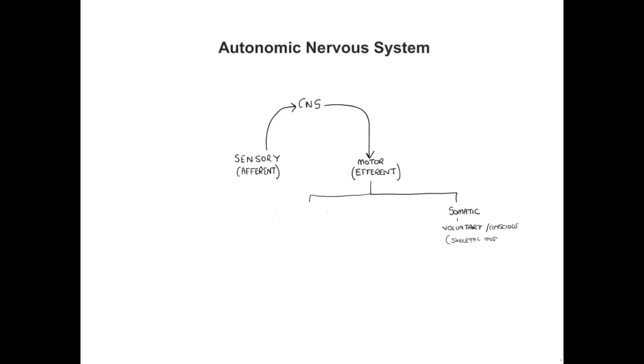The other arm of the motor or efferent peripheral nervous system is our general visceral efferents. You're perhaps more familiar with these as the autonomic nervous system. These motor efferents are innervating structures that are not necessarily under our conscious control or awareness and are therefore considered involuntary. They will feed various structures within our body core and our periphery.